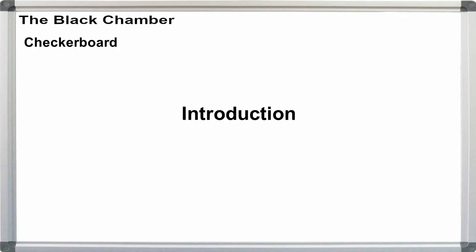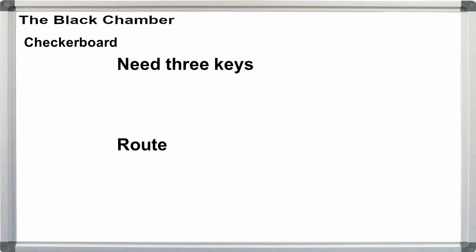Once we've got our square, we can start using it as the basis for a variety of cipher types. I'll start by introducing Checkerboard here. For Checkerboard, we need three keys and the on by route.